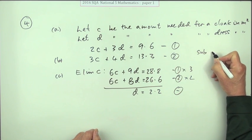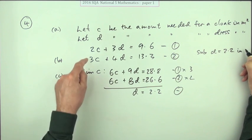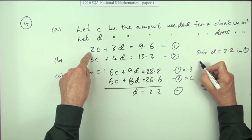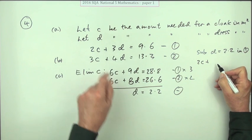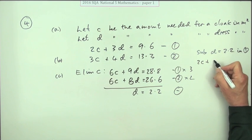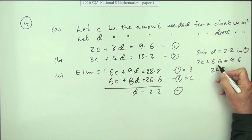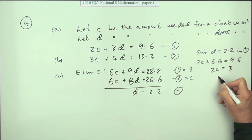Put that back into whichever one you fancy. Substitute d equals 2.2. I'll just take the first one. That means the first one's going to read 2c plus three of them, I'm just going to jump in with 6.6 equals 9.6. So 2c, take away the 6.6, will be 3, so c equals 1.5.